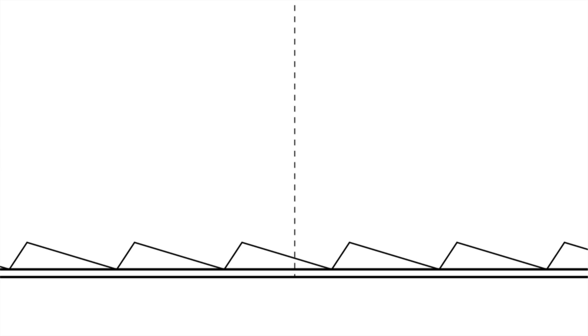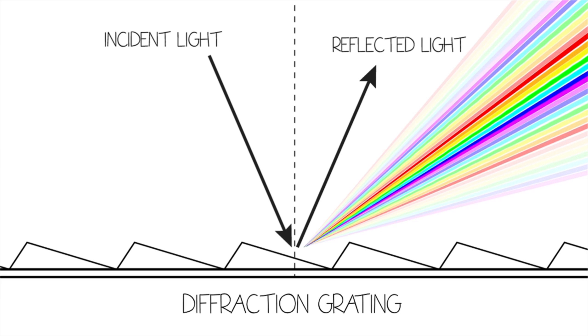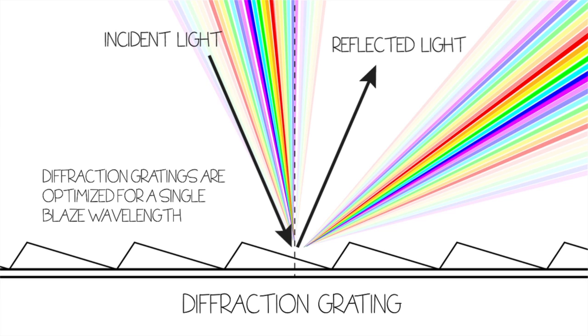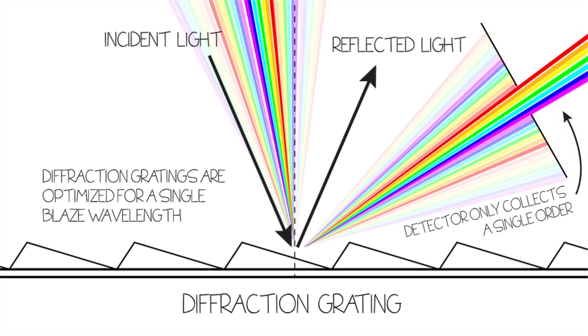Alternative spectral dispersion systems use the less effective diffraction grating. A single grating generates a spectrum at a preferred wavelength called the blaze wavelength. Additionally, gratings generate multiple orders of diffraction from which only a single order can be collected.